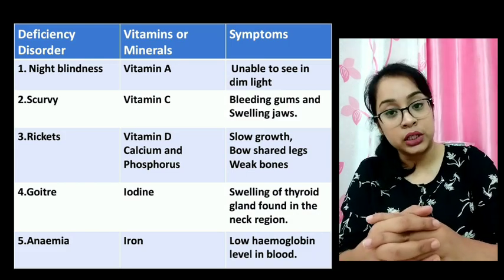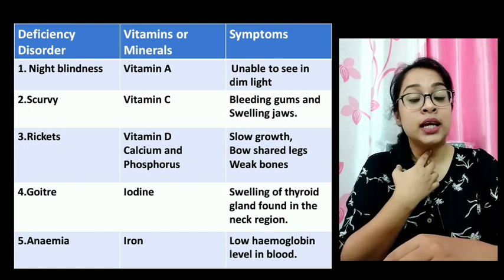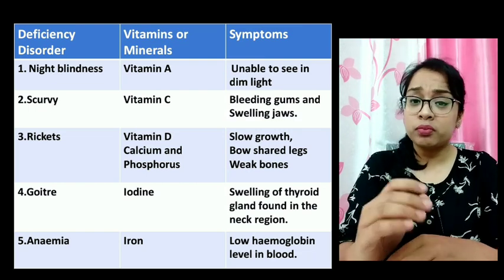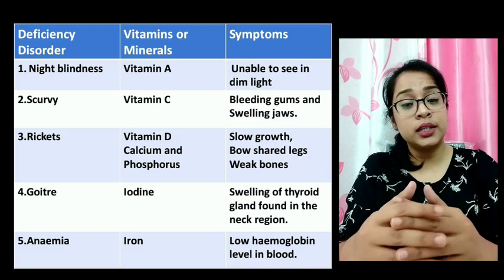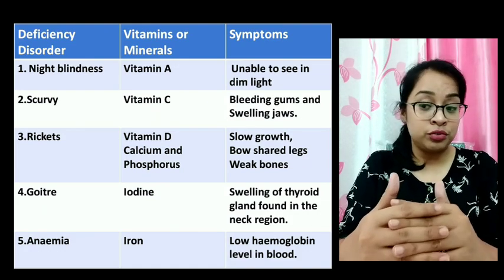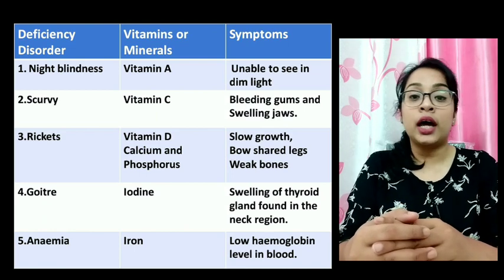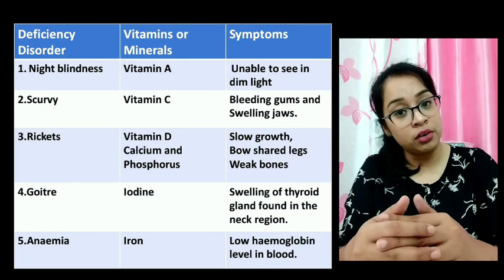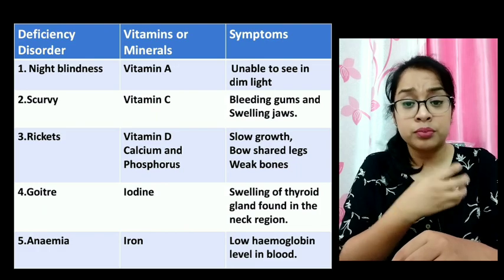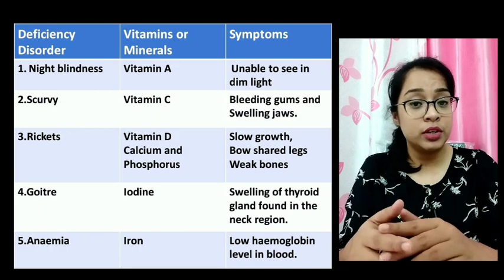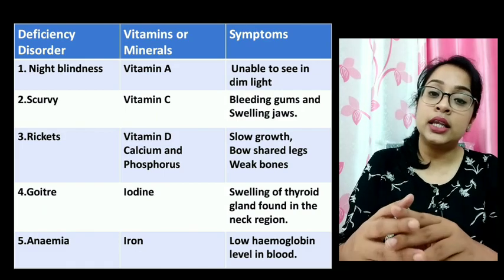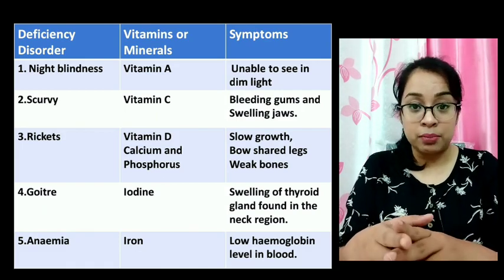Next is goiter, which is caused due to the deficiency of the mineral iodine. There is a gland in the neck known as the thyroid gland, which secretes a hormone known as thyroxine. The thyroid gland requires iodine to secrete thyroxine. If the intake of iodine is less in your diet, the thyroid gland will not be able to secrete thyroxine and the gland will swell. The symptom is swelling in the neck, and it can be prevented by having iodized salt or eating seafood.